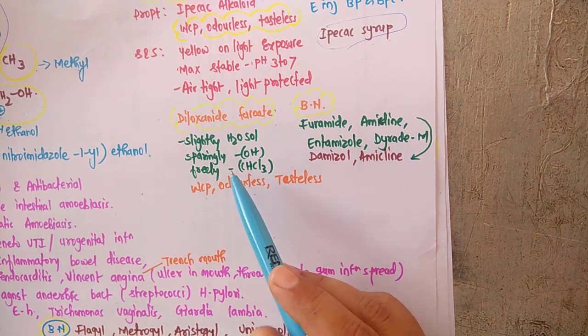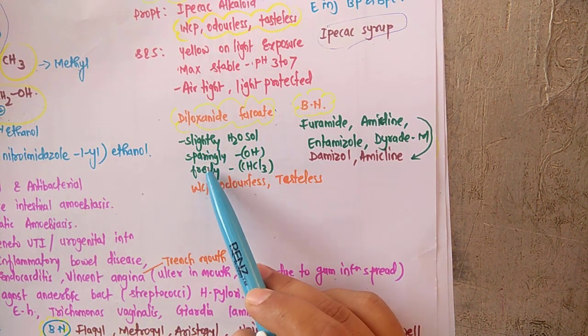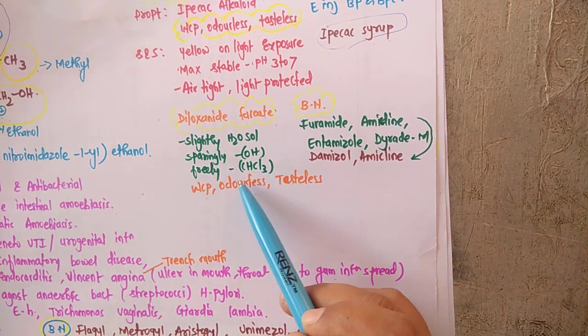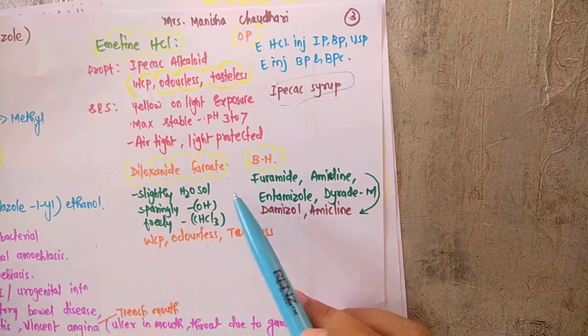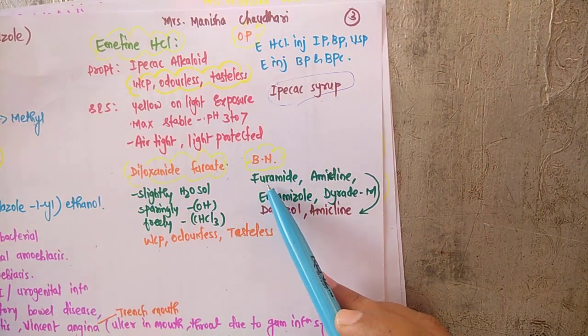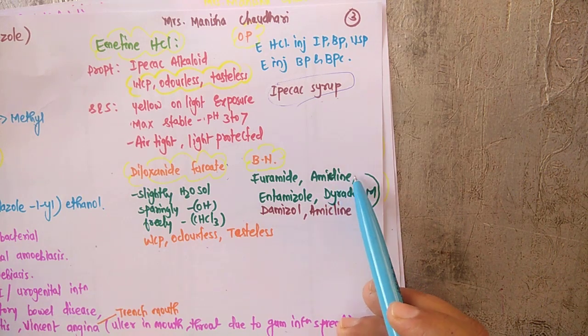Coming towards the properties, this is again white crystalline powder, odorless, tasteless. Coming towards the solubility, this is slightly soluble in water, sparingly soluble in alcohol, and freely soluble in chloroform.